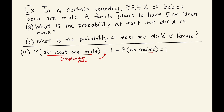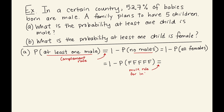The probability of at least one male equals one minus the probability of no males, which is one minus the probability of all females — that is, one minus the probability of getting five females in a row. Since the gender of each child is independent in each birth, we can use the multiplication rule for independent events, rewriting this as one minus the probability of female raised to the fifth power.